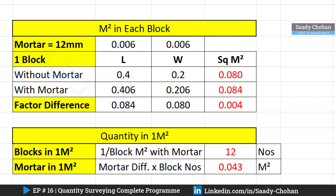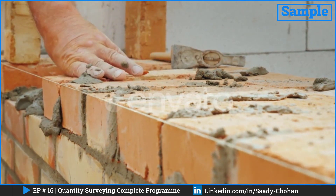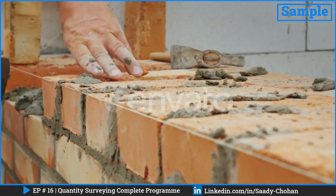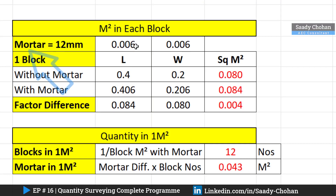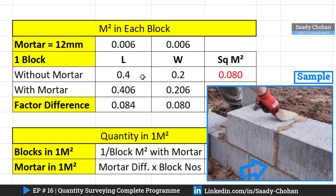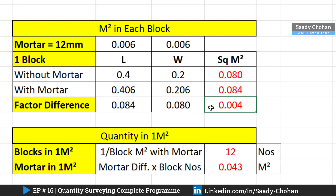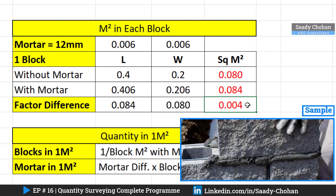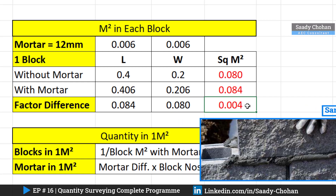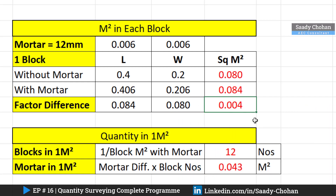The mortar joint spacing between two blocks can vary from 12 to 15 or even 25 mm depending on the technology and ratio used, so I have mentioned 12 mm here. One block length and width without mortar gives an area of 0.080 square meters. With mortar, I sum the length and width to get 0.084 square meters. The factor difference is 0.084 minus 0.080, which represents the mortar between two blocks.